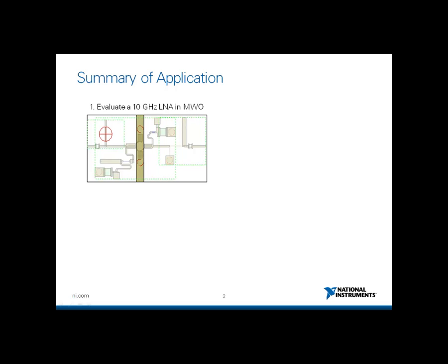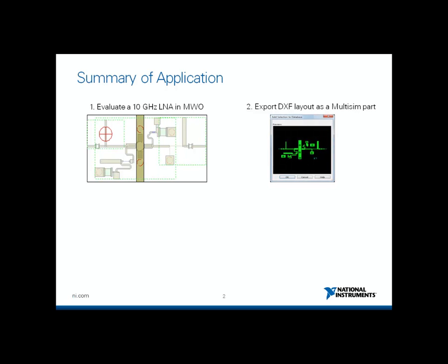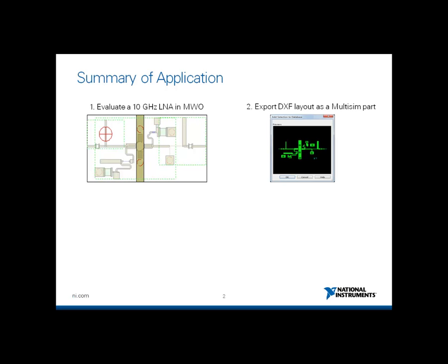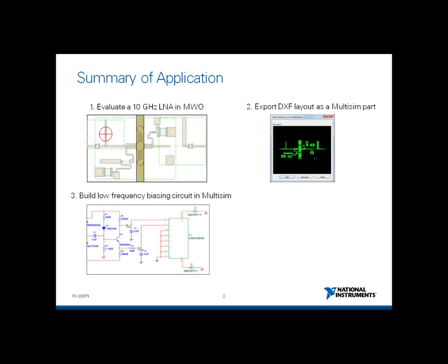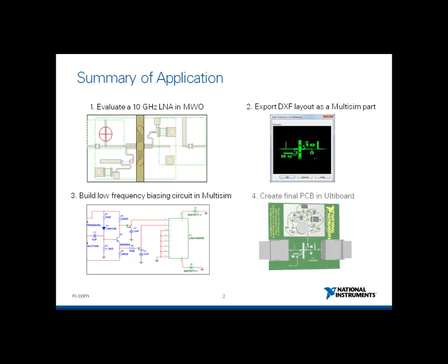Let's start with a quick summary of what we will be doing. The first step is to have the low noise amplifier designed in Microwave Office with a created layout for the RF section of it. Then this low noise amplifier will be exported using a DXF file into NI Ultiboard's database as a new component. Following that, a low frequency biasing circuit will be simulated in Multi-SIM where the low noise amplifier part will eventually be added to finally create the final PCB.